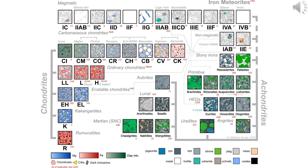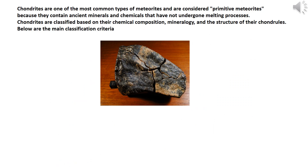Measure density: the density of a meteorite can aid in identification, since metal-rich meteorites typically have higher densities. Meteorite classification is a complex process requiring high expertise and modern laboratory equipment. Scientists often use multiple techniques to confirm classification results.